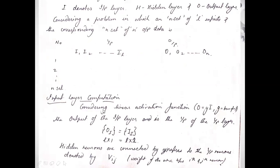For input layer computation, we are considering the linear activation function. The linear activation function has the formula: output equals G(i), where G is the transfer function and its gain phi equals 1. So the output will be equal to the input. Therefore, the output at the input layer will be equal to the input at the input layer.